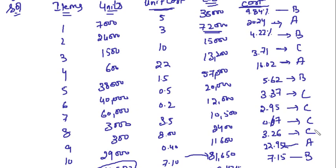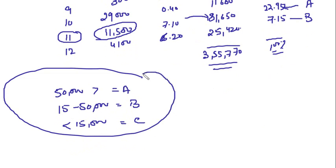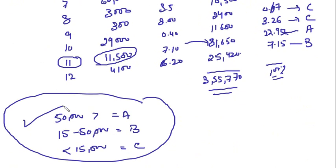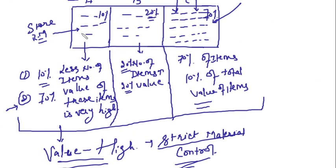Regarding the partition criteria, there is no hard and fast rule. This is absolutely your perception. Even when writing in exams, any example you want to give is at your discretion. Every company, factory, and premises adopts its own formula for ABC analysis. The importance of ABC analysis is to identify the high-value items so that strict material control can be exercised on those A category items.